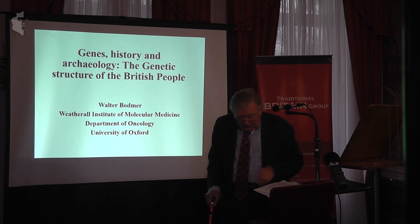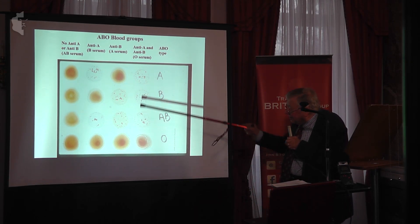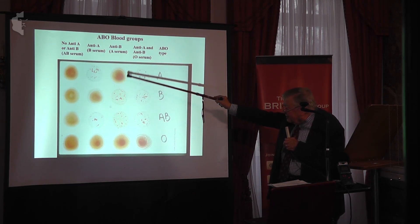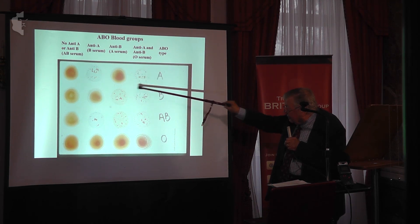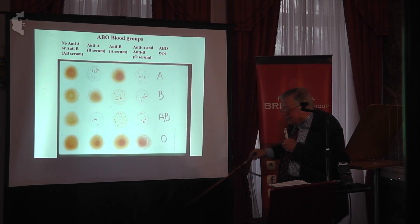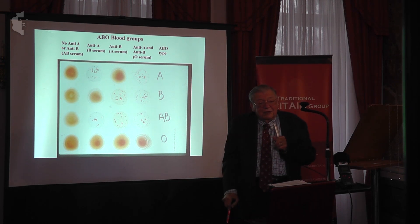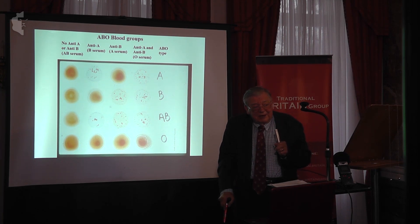My first slide: you've almost certainly all given blood at some time, and you may have had your ABO types given. They're shown here because if you're type B, you have an anti-A, and that will agglutinate and cause clusters of a type A person, and so on.